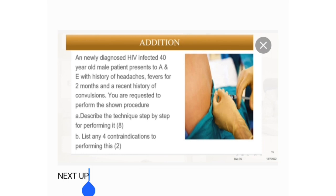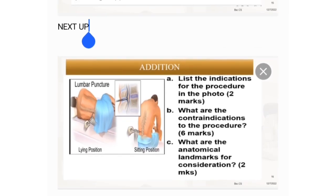List four contraindications to performing this procedure. The next station covers the same topic: you have two positions in which you can do a lumbar puncture — the lying position and the sitting position. Question A asks you to list the indications for the procedure (2 marks), the contraindications (6 marks), and the anatomical landmarks for consideration.